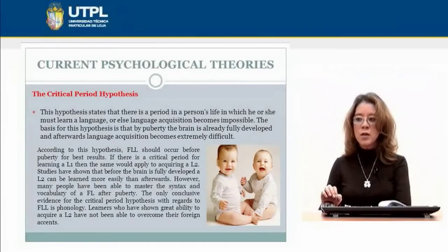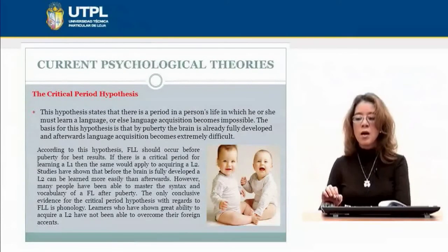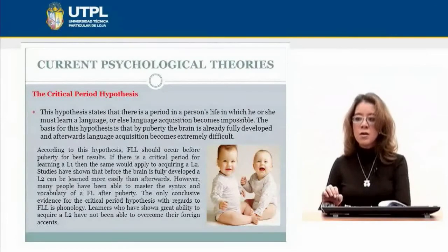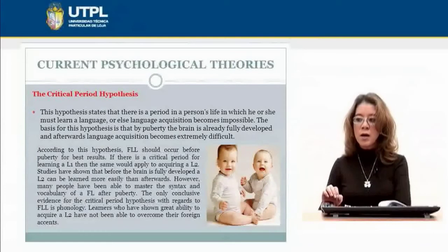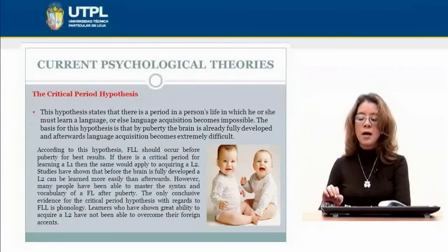Studies have shown that before the brain is fully developed, a second language can be learned more easily than afterwards. However, many people have been able to master the syntax and vocabulary of a foreign language after puberty. The only conclusive evidence for the critical period hypothesis with regards to foreign language learners is phonology — learners who have shown great ability to acquire a second language have not been able to overcome their foreign accents.